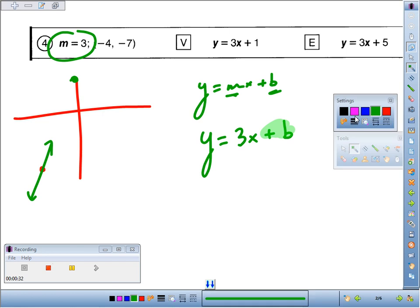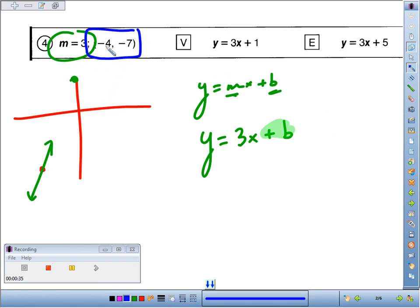We find it by utilizing the fact that they gave us a point on the line. They said negative four, negative seven is on the line. That means when you plug negative four in for x and negative seven in for y, it has to make the equation true.